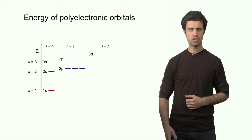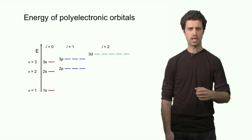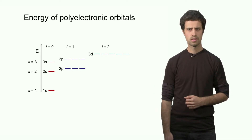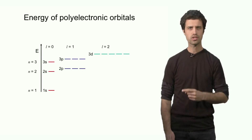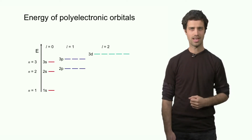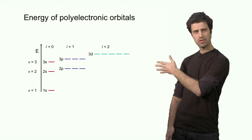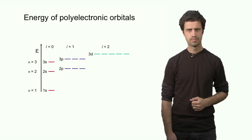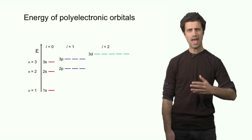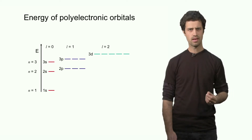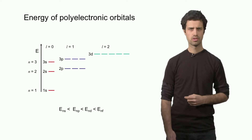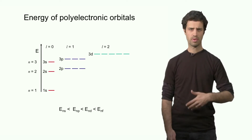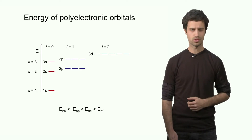The shifting of these levels is due to the electron-electron interactions. So for poly-electronic atoms — atoms with more than one electron — the energy levels of the orbitals follow this diagram, which means that for any given n, the s orbitals have the lowest energy, followed by the p orbitals, followed by the d orbitals, followed by the f orbitals.